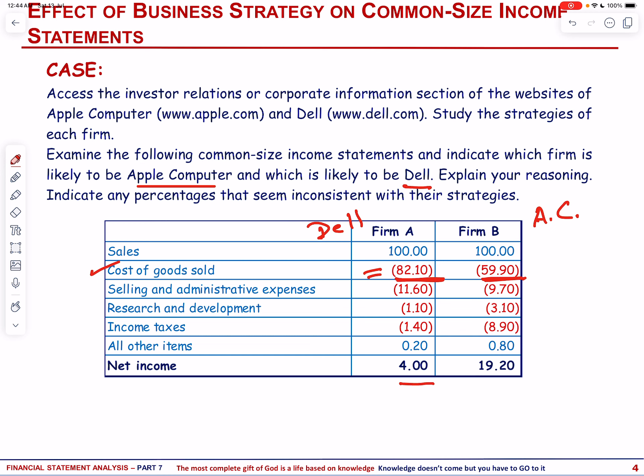In summary, Dell's higher cost of goods sold as a percentage can be attributed to its strategy of assembling standardized components to compete on price, whereas Apple's lower cost of goods sold to sales percentage reflects its ability to charge premium prices for innovative and differentiated products that offer higher margins. These differences underscore how companies' strategic choices in product development, manufacturing, and market positioning influence their financial performance metrics such as the cost of goods sold to sales ratio.